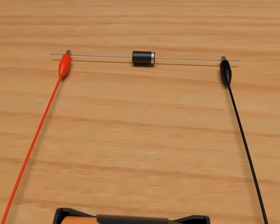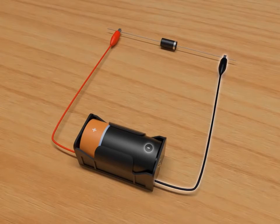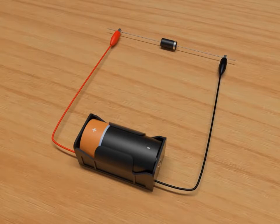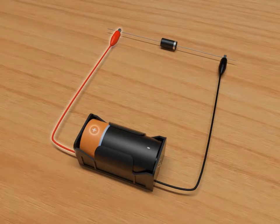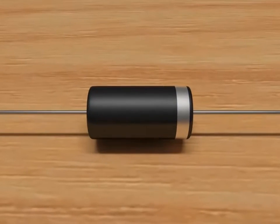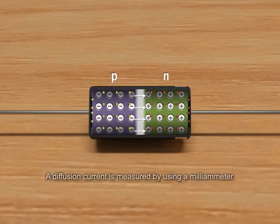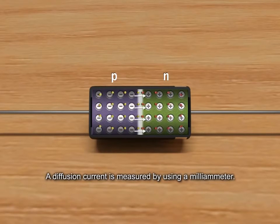In a forward bias, when a cell is connected across the diode, the N-side of the semiconductor is connected to the negative of the cell and the P-side is connected to the positive of the cell. Then, the barrier potential decreases and due to the process of minority carrier injection—the P-side has holes, the N-side has electrons—producing a diffusion current which is measured by using a milliammeter.